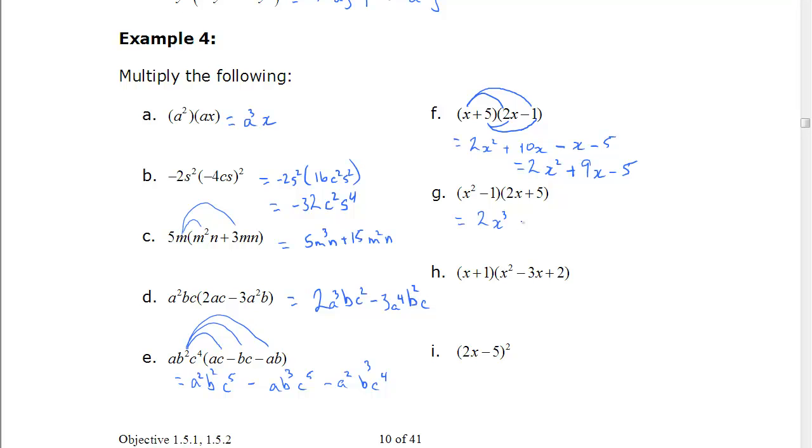And we'll get these last couple of answers here. 5x squared, 2x and 5. Nothing to combine this time because the coefficients are all different. Cubed, squared, and power of 1.